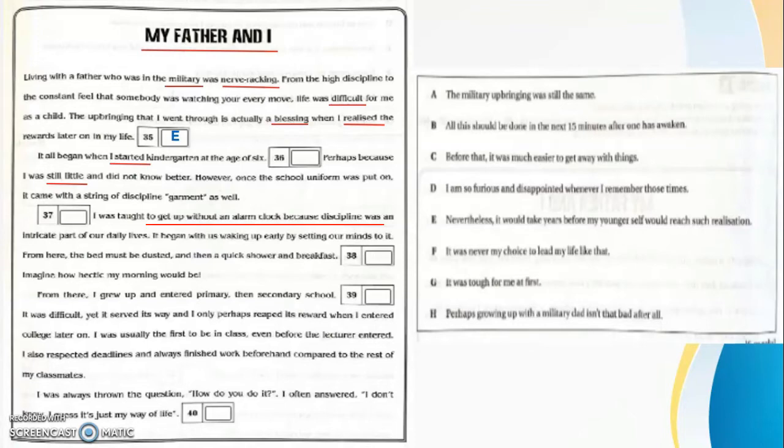Okay, now we go to the next question. Question 36, the answer is C: 'Before that it was much easier to get away with things.'